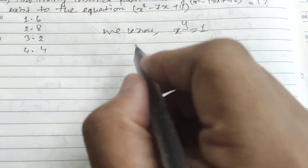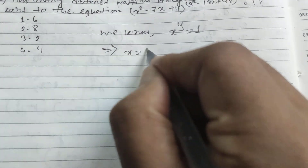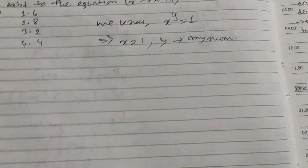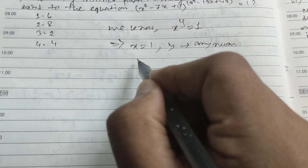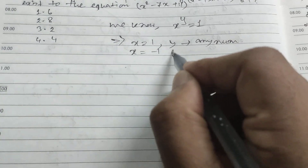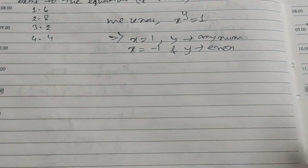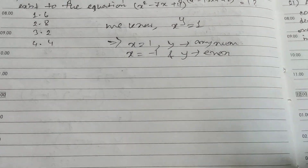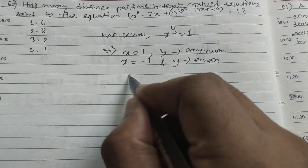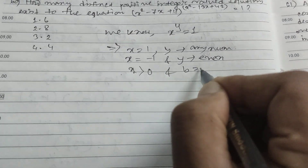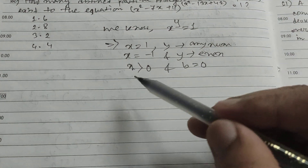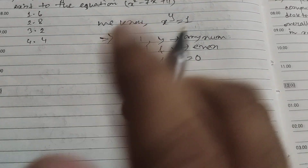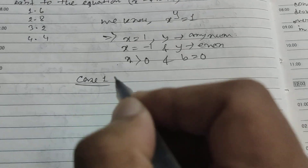When x^y = 1, it is possible in three cases: Case one — x equals 1 and y is any number. Case two — x equals -1 and y equals an even number, for example (-1)^2 or (-1)^4 equals 1. Case three — x is greater than 0 and y equals 0, since any nonzero number to the power 0 equals 1.